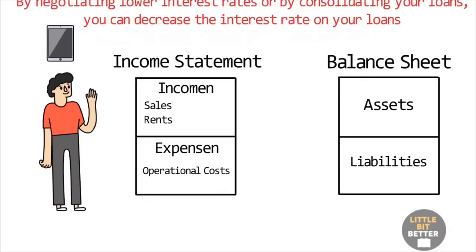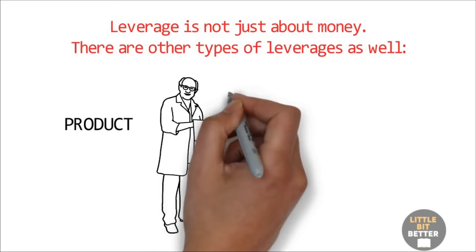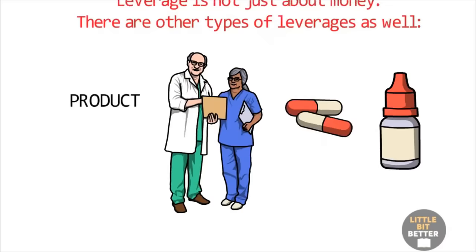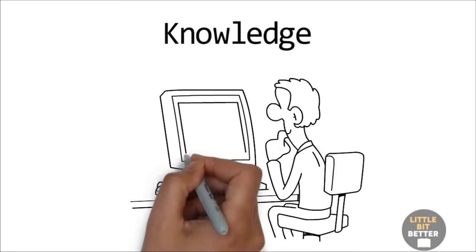Leverage is not just about money. There are other types of leverages as well. Product can be used as leverage. For example, if you are a doctor, it is hard for you to leverage your value if patients come only to see you. But if you invent a new cure or kind of medicine, then your medical intelligence can be leveraged via a product. Other people's knowledge is another example of leverage. For example, if you are bad at editing videos, you can hire someone who can complete the work in one hour instead of you spending 20 hours.